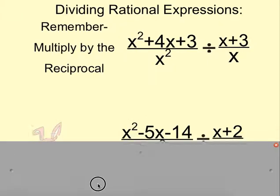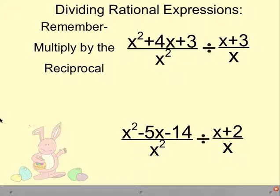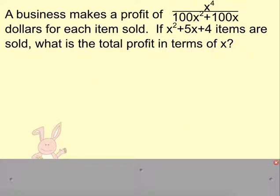So I'm just going to show you a few more that you can try on your own here. Remember, copy, flip. Keep the first one the same. And then multiply and use the reciprocal. So even when they go and put it into word problems, the same rules apply. So let's say a business makes a profit of this expression dollars for each item sold. If x squared plus 5x plus 4 items are sold, what's the profit? Which means that we need to multiply these together. Which truly just means that we need to multiply the two fractions, factor, and simplify as much as possible.